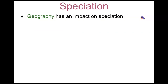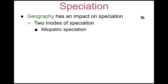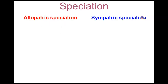Geography does have an impact on speciation. When we talk about geography, we're looking at land features and where the organisms live among those land features. There are two modes of speciation: the first mode is what we call allopatric speciation, and the second type is called sympatric speciation.